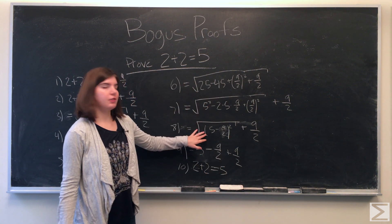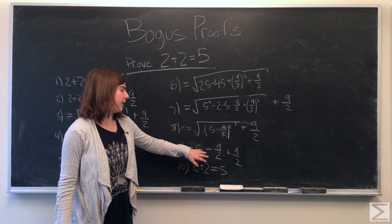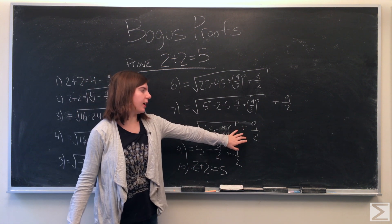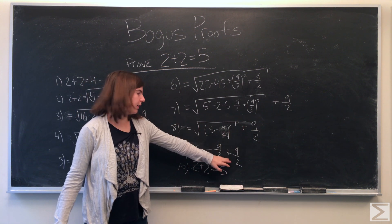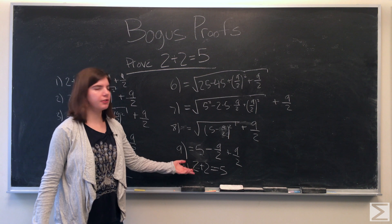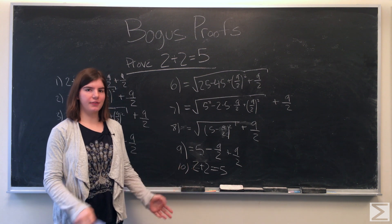This reduces to 5 minus 9 halves, and we still have to add that 9 halves, so we're left with 2 plus 2 is equal to 5.